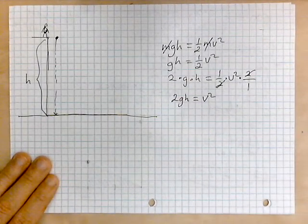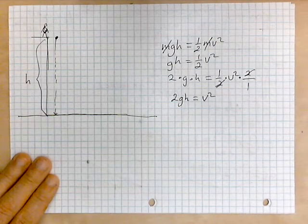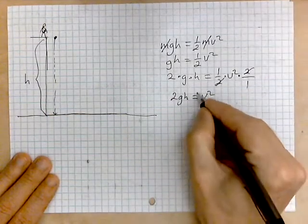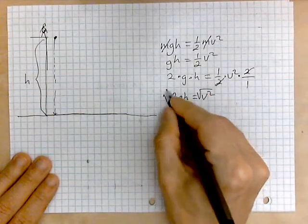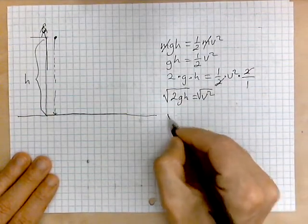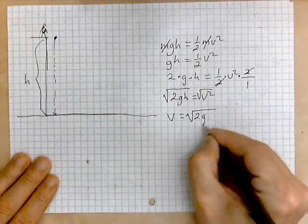Once we have this the next step is to take square roots because the square root operation is the inverse or the opposite of the squaring operation. So we take the square root of both sides as follows and so we find that v equals the root of 2GH.